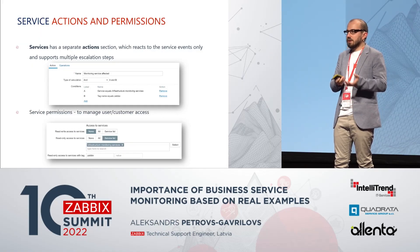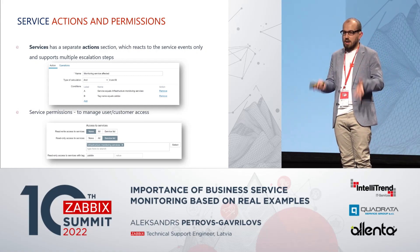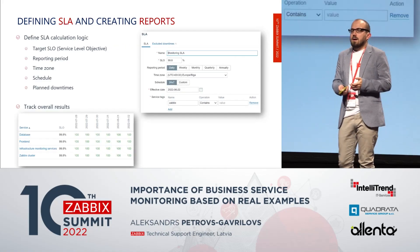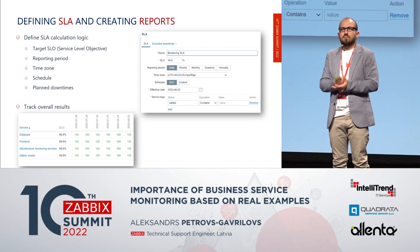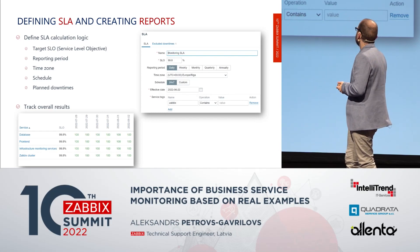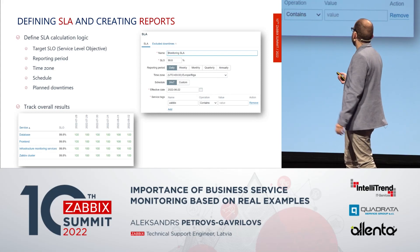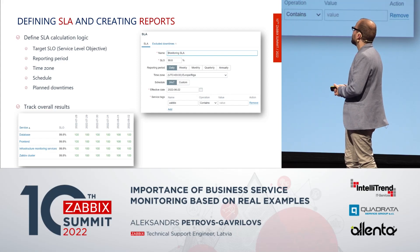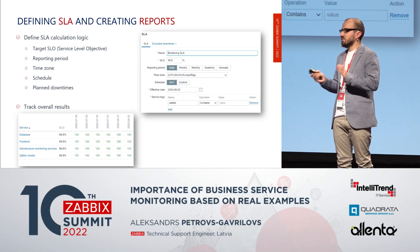Not only actions, but permissions too — we can define who can see what. And of course the reports themselves, where we define how things should be calculated, what our objective is — whether we want to achieve 99.8% or 100% uptime, and whether our business works 24/7 or on a specific schedule. Most of you already know this.